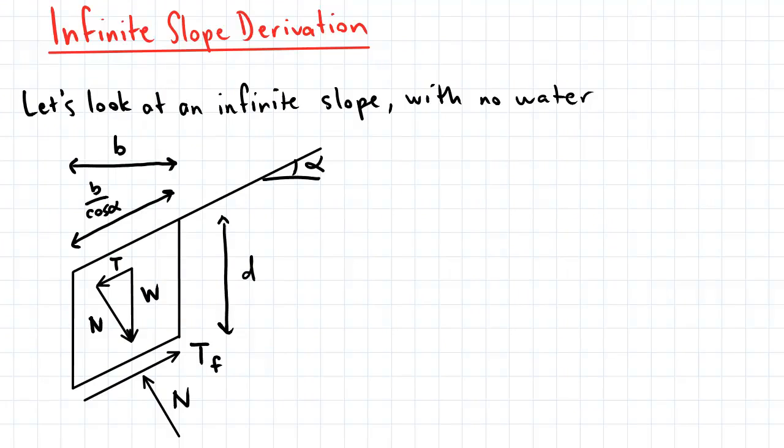So let's now look at an infinite slope with no water. So this is our slope here, inclined at an angle of alpha above the horizontal. This here is our soil element. It has a width of B and a depth of D, and along the slope surface this length is represented by B divided by cosine alpha.